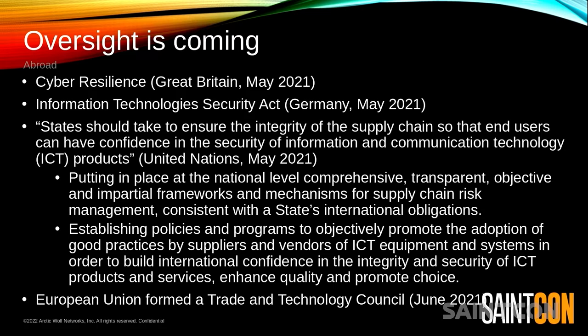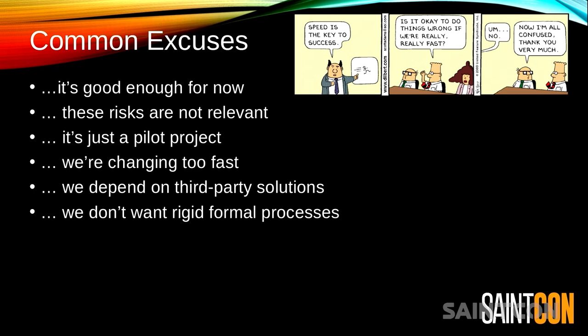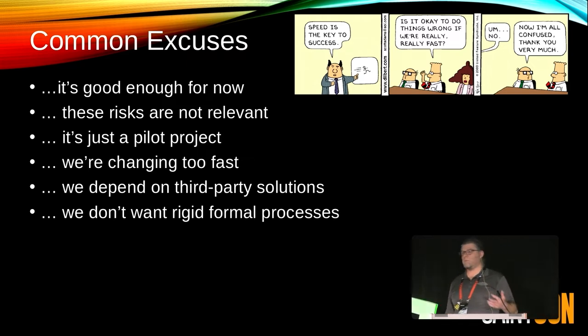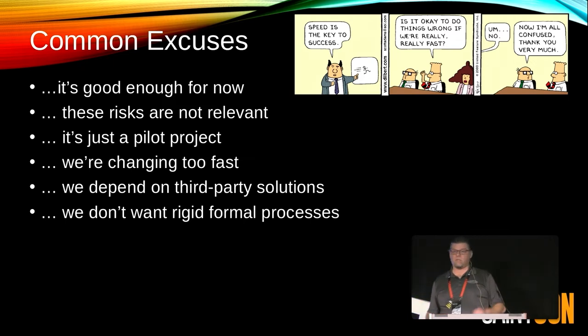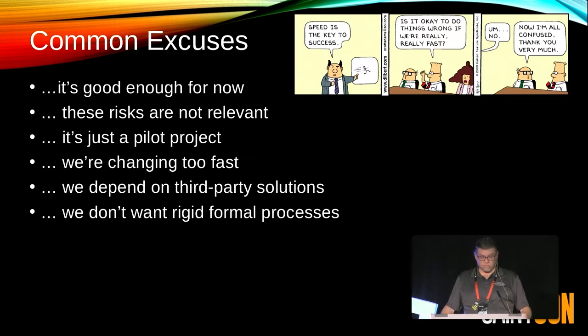Selling software to governments is always looked after by your sales team. If you can't support them by having the required processes, you'll miss that opportunity and one of your competitors will take it. You typically hear a lot of different reasons or excuses for why software security can't be built in now: 'it's good enough for now,' 'these risks are not relevant,' 'it's not the number one priority,' 'it's just a pilot project' — that ends up invariably being in production — 'we're changing too fast,' 'your controls will slow us down,' 'we depend on third-party solutions,' 'we're agile.'